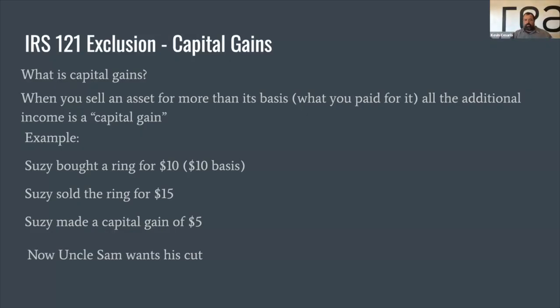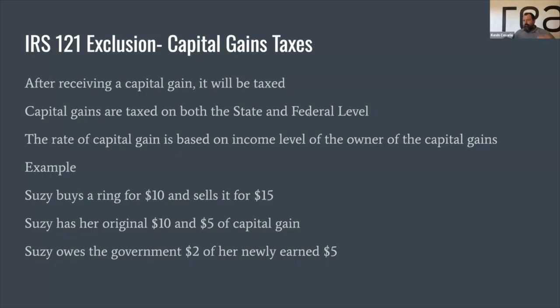Before we get into the IRS 121 exclusion or the 1031 exchange, first and foremost we need to understand what capital gains are. What is a capital gain? When you sell an asset for more than its basis — aka what you paid for it — all the additional income is a capital gain. My example here is: Suzy bought a ring for ten dollars, Suzy sold the ring for fifteen dollars, Suzy made five dollars of capital gains. Now uncle Sam wants his cut — that's where capital gains taxes come in.